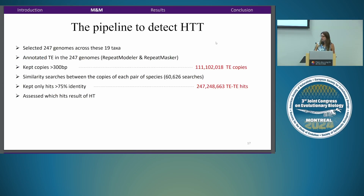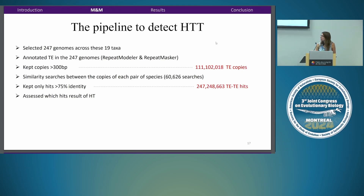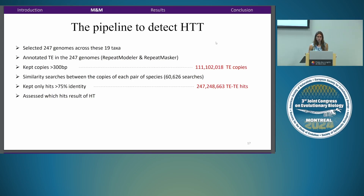We sampled 247 animal genomes from NCBI representing aquatic and terrestrial species across the 19 taxa. We annotated transposable elements in all those genomes using RepeatModeler and RepeatMasker, collecting only copies at least 300 base pairs long — giving us a total of 111 million copies of transposable elements. We then did similarity searches between each pair of species: 247 times 247 in both directions, about 60,000 searches. We kept only hits showing at least 75% identity.